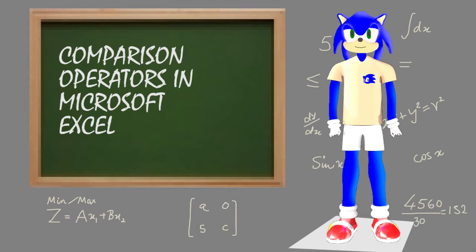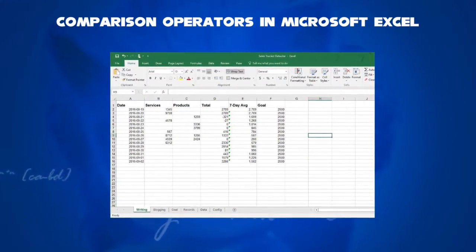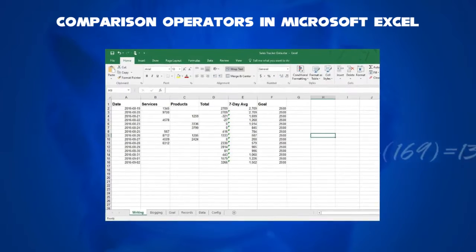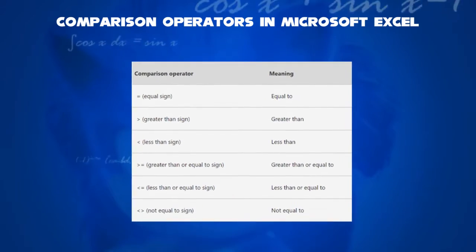Hello, I'm Sonic. We will learn about comparison operators in Microsoft Excel. In the last video, we learned about arithmetic operators: plus, minus, multiply, divide, the percent, and the caret sign. Now we go ahead with six types of comparison operators: equal sign,